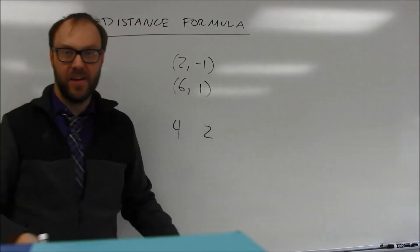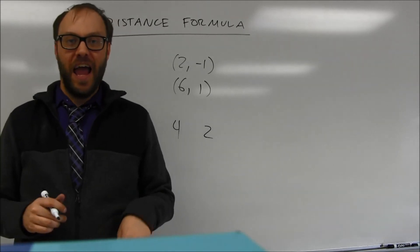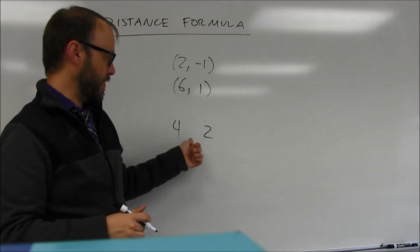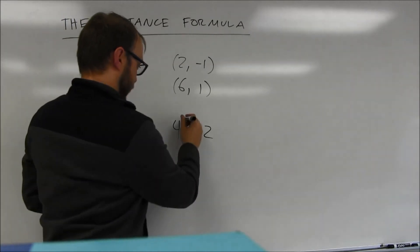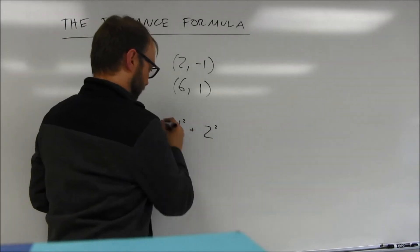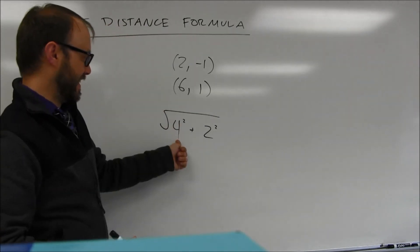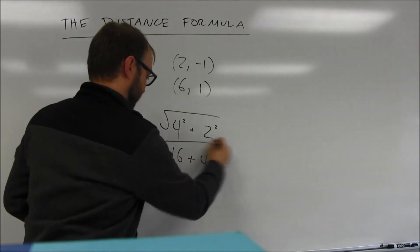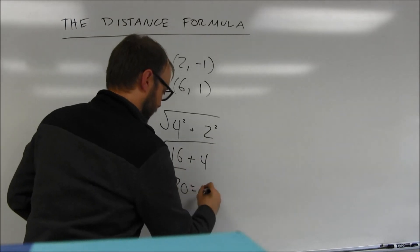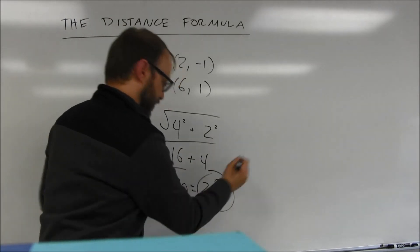This isn't going to form a Pythagorean triple, but those are two sides of a right triangle, so I can do 4 squared plus 2 squared and take the square root. That's 16, that's 4. We're just taking the square root of 20, which ends up being 2 times the square root of 5.